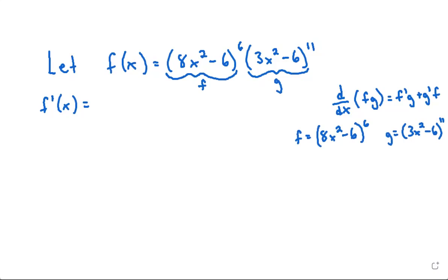To find f prime, we have an outside function — the power of 6 — and an inside function — 8x squared minus 6. So we use the chain rule: apply the power rule to the outside function by bringing down the 6, giving us 8x squared minus 6 to the power of 5, leaving the inside function the same, and then multiply by the derivative of the inside function.